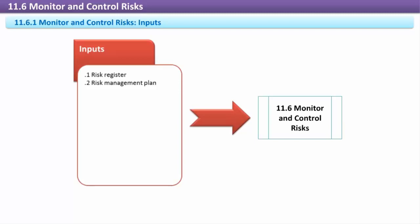Project Management Plan: The risk management plan is a component of the project management plan. It details and defines the risk management activities for the project. The plan establishes the risk methodology, risk roles and responsibilities, risk categories, probability and impact scales, risk tolerances, frequencies of risk management activities and reporting, and the budget and schedule for risk management activities.